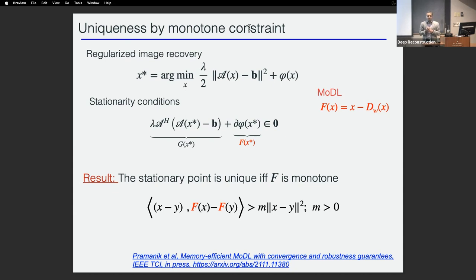A question about the adaptive model asked whether it works across different anatomies and sampling patterns, or only different contrasts. The speaker replied that the paper on arXiv covers four different contrasts, different acceleration factors (3, 4, 6, etc.), and two different field strengths. It can in principle be extended to different anatomies, though that hasn't been done yet.